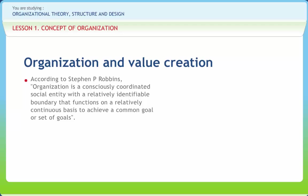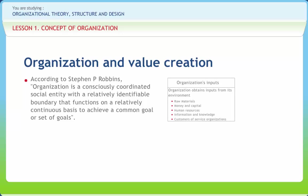Stage 1 is the organization's inputs. Inputs include human resources, information and knowledge, raw materials and capital. Stage 2 is the organization's conversion process — the way the organization uses its human skills and abilities, machinery and computers to transform the inputs into outputs determines how much value is created at the conversion stage.